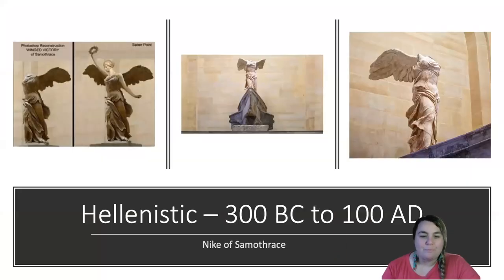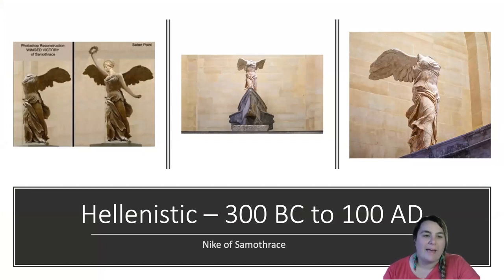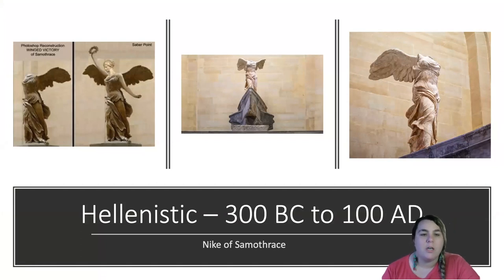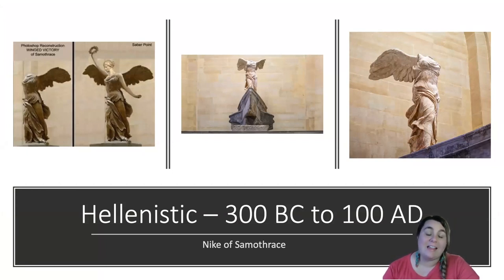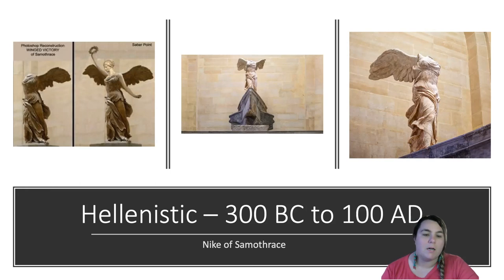Looking at different angles of Nike of Samothrace, you can see the wings stretching out from her back. An artist rendering shows what she probably looked like before she was damaged, when she still had her head and arms. This illustrates the stylistic difference from all previous periods of Greek art. Nike of Samothrace is a wonderful example of Greek achievement during the Hellenistic period — the last period of ancient Greek art, which runs concurrently with the rise of the Roman Empire. Much of this art also influenced Roman art as well as later classical traditions.